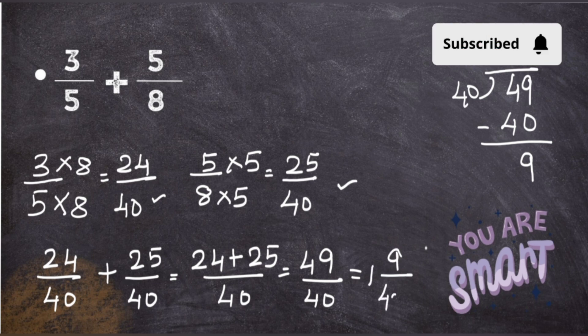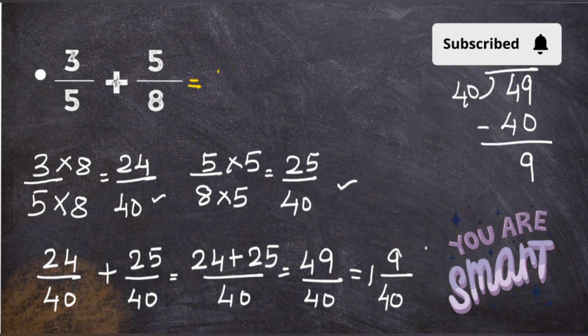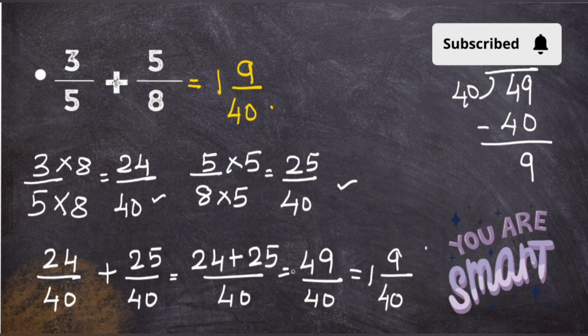Yes, please don't forget this step because it also carries the marks. Why simply lose marks for such a simple small step? Make the habit of looking for the simplest form. So the answer of 3 upon 5 plus 5 upon 8 will be 1 and 9 upon 40. This is how you're supposed to solve the fractions where the denominators are not the same, that is unlike fractions. Hope you have understood. Please don't forget to subscribe. Meet you in the next class. Till then, take care!